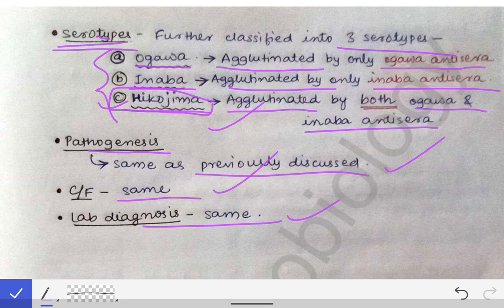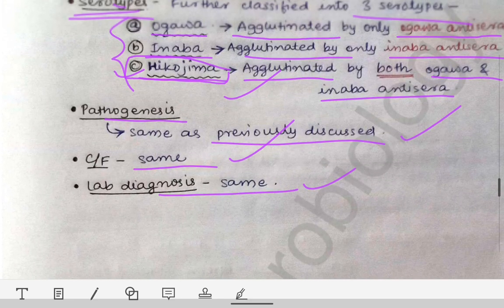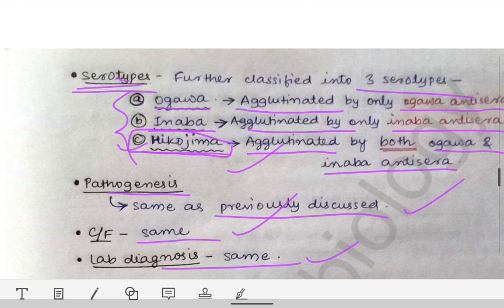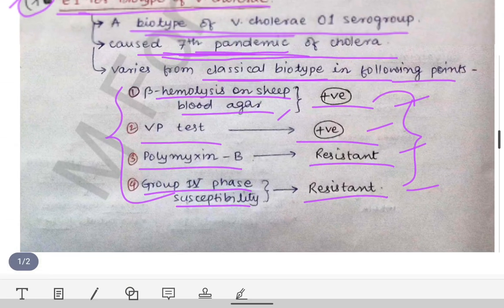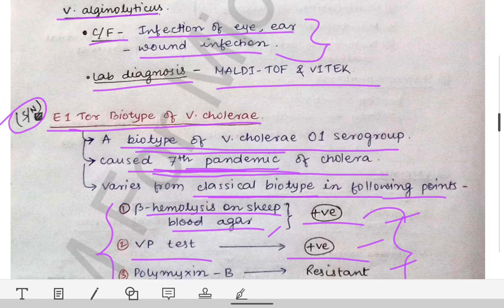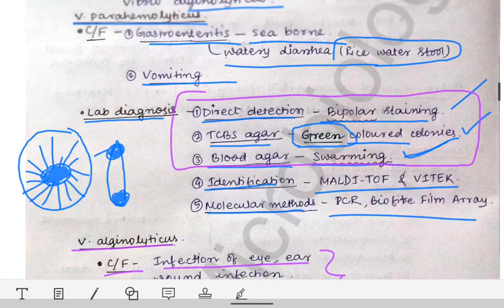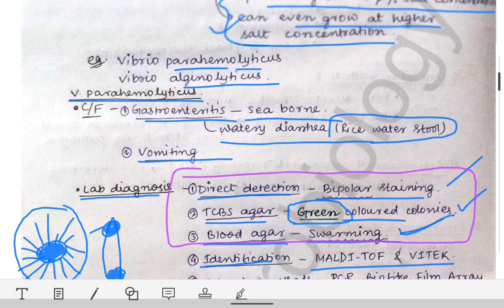In that way you can write the short note or short answer questions for the El Tor or classical biotype. This is all about the cholera topic, and with this the topic of cholera comes to an end. Next we will see another topic.